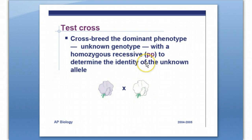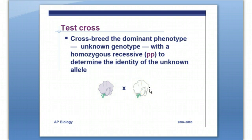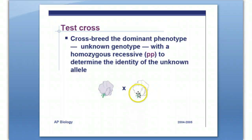The answer is a test cross. When you cross an unknown purple phenotype plant, or any dominant phenotype, with the recessive, you can analyze the offspring to try to figure out what the genotype was of the dominant phenotype parent. Remember that to get white flowers, there's only one way: little P, little P. So you know the genetics of a recessive phenotype plant, but you don't know the genotype of a dominant phenotype plant.